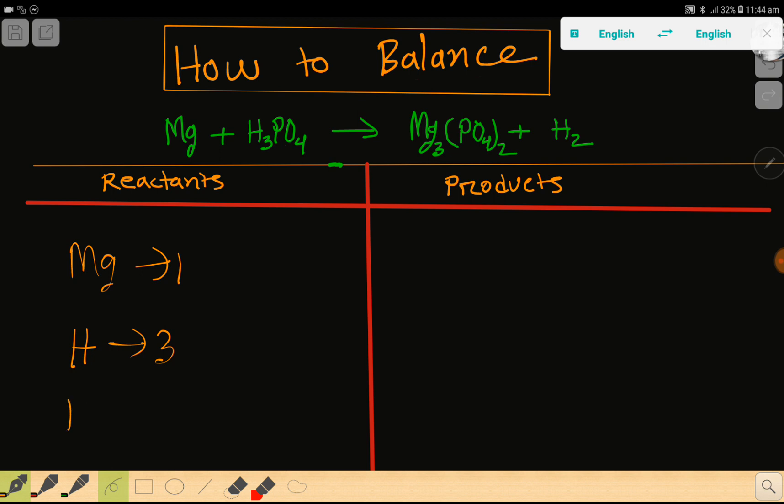On the right hand side we have magnesium which is three, then we have phosphate which is two (the subscript is two).